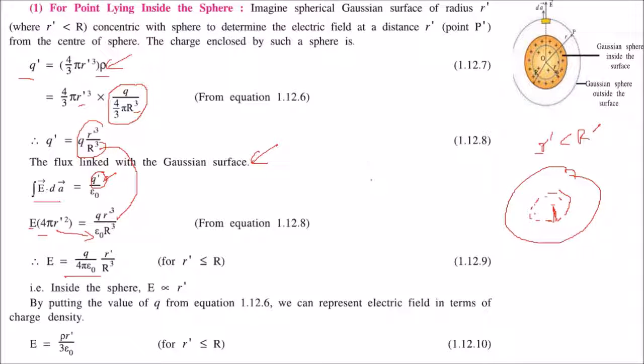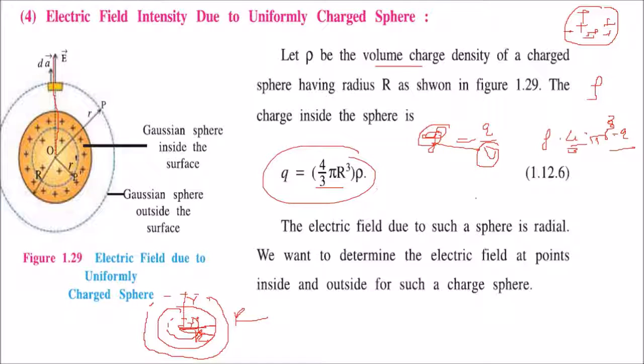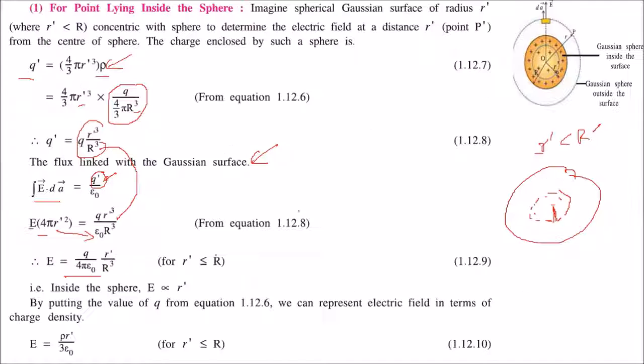If you substitute q = 4/3 π R³ ρ into this equation, it becomes E = ρr'/3ε₀. This is the electric field inside a uniformly charged sphere.